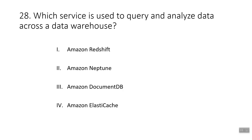Question twenty-eight: which service is used to query and analyze data across a data warehouse? The answer is Amazon Redshift, a fast, fully managed, cost-effective data warehouse service. Amazon Neptune is a graph database service. Amazon DocumentDB is a document database service that supports MongoDB workloads. Amazon ElastiCache adds caching layers on top of databases to improve read times.